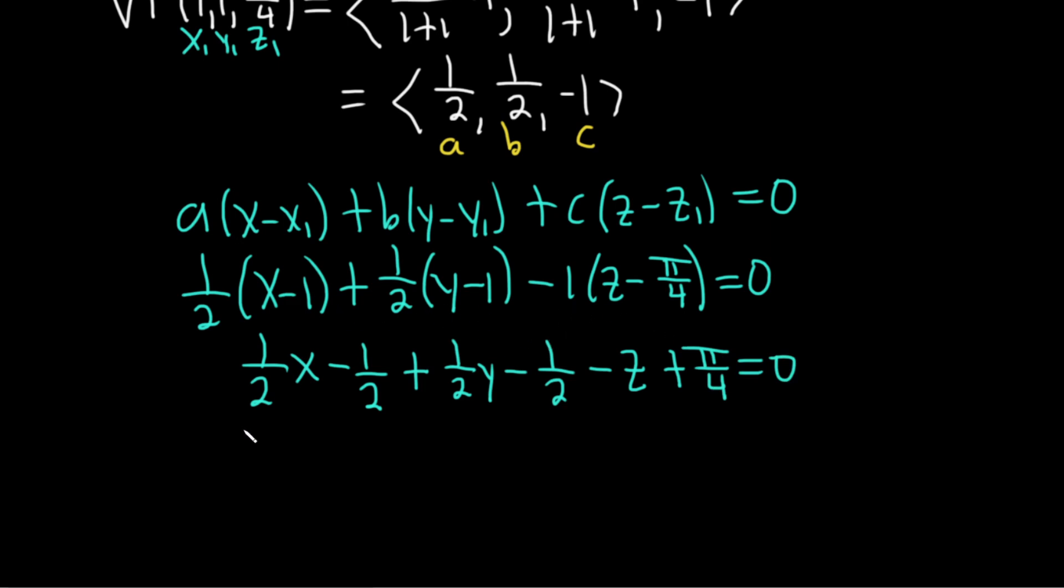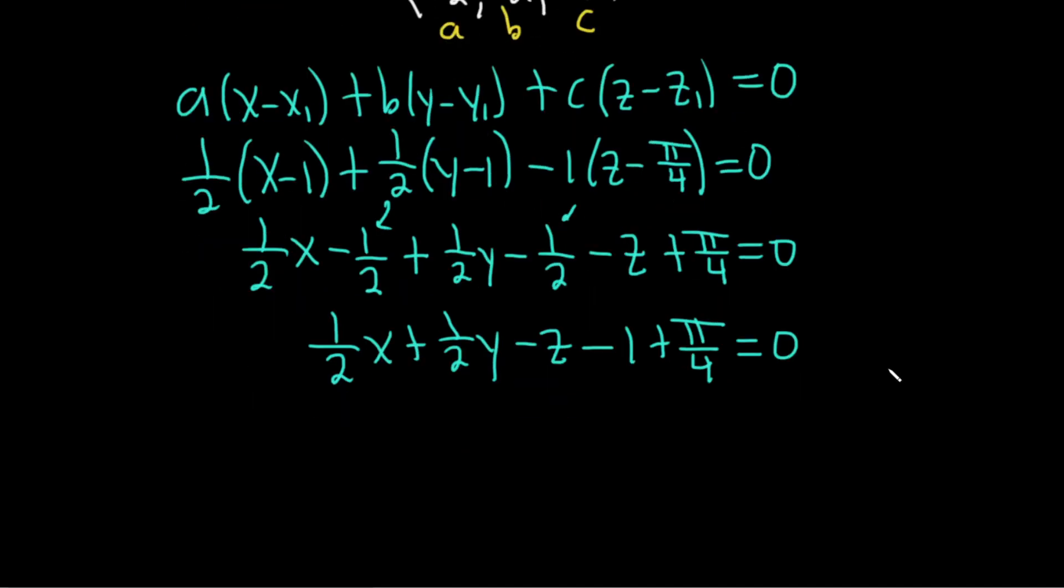Let's check. Good, looks good. Let's write down the variable terms first: (1/2)x + (1/2)y - z. I always mess up at the end, so I should be really careful. -1/2 - 1/2, that's -1 + π/4. And just maybe it's good form to write it on the other side. So this is (1/2)x + (1/2)y - z. And then adding the 1 and subtracting π/4 will leave us with this over here.